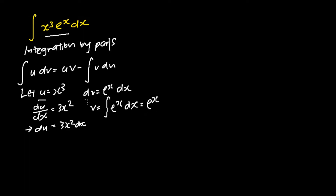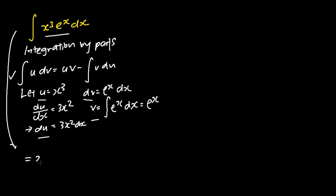I found my u, dv, v, and du. I can apply this integration by parts formula to move on to the next step. My u is x cubed, my v is e to the power of x, subtracting away the integral of v, which is e to the power of x, times du which is 3x squared dx. And I simplify it in such a manner.